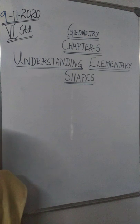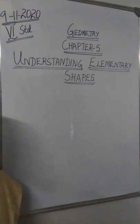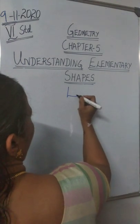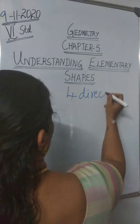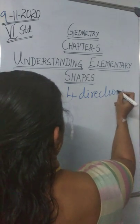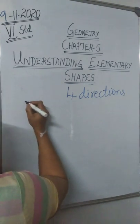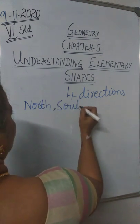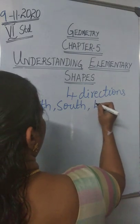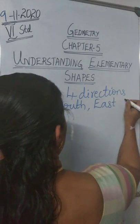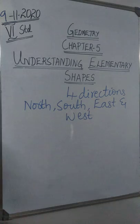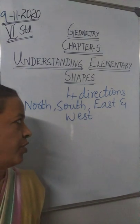You might have learnt about directions in your geography. Can you tell how many directions are there? There are four directions. Which are they? North, south, east and west. You know all these directions. Now, here we will learn more about it.